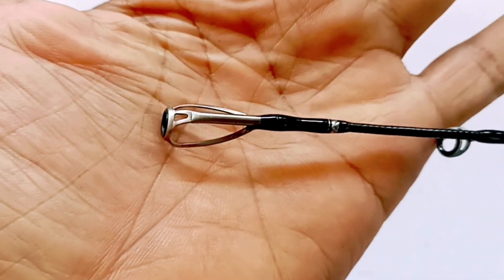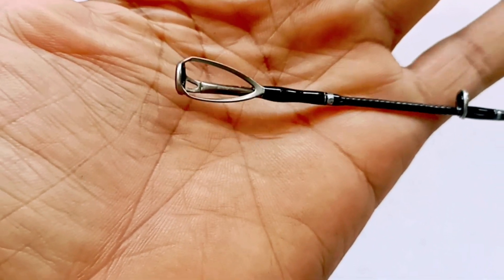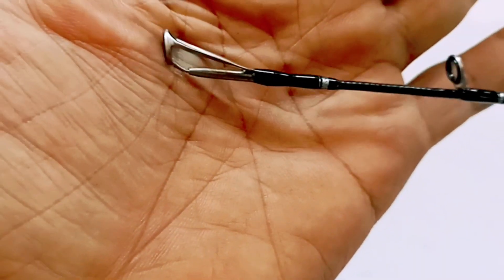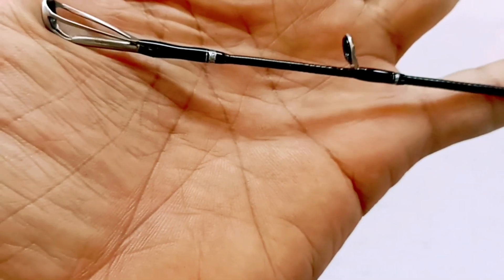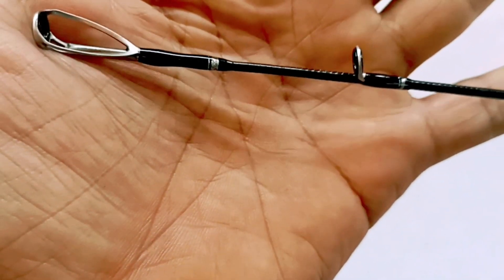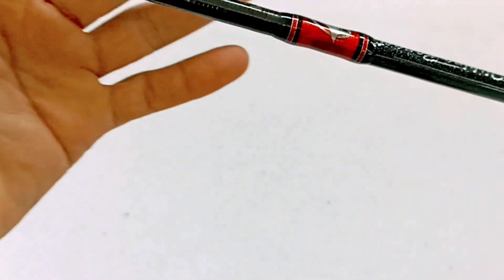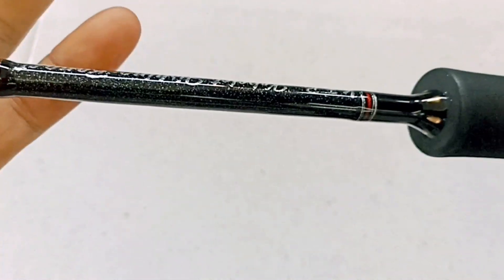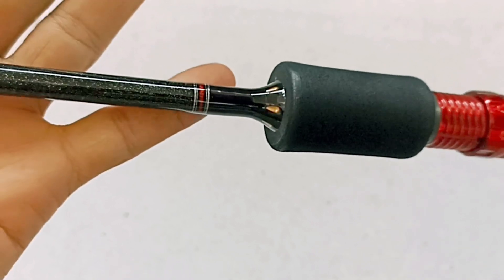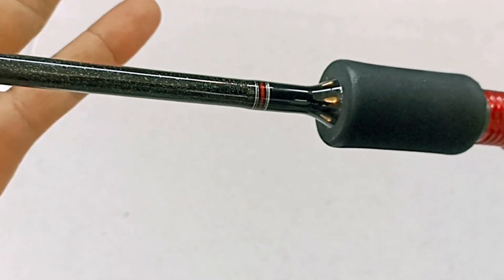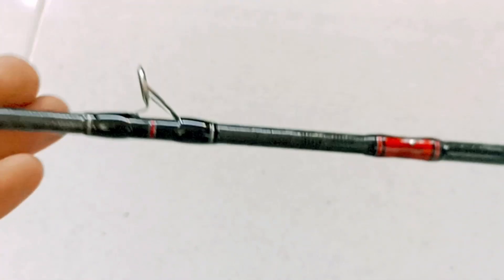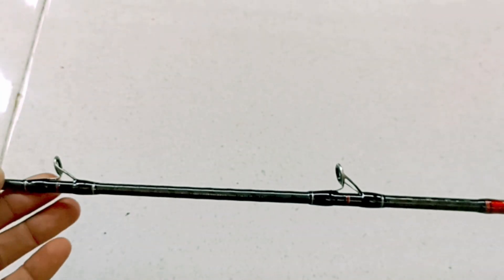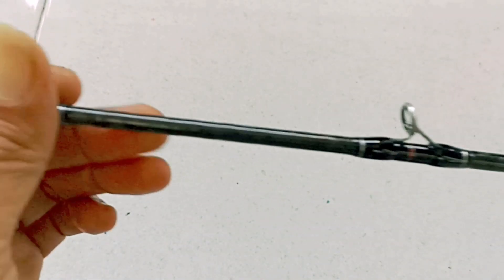This is 190-plus cm length for main type slow jigging, slow pitch, this is really nice. Great with PE3 to 4, 11 ring guides